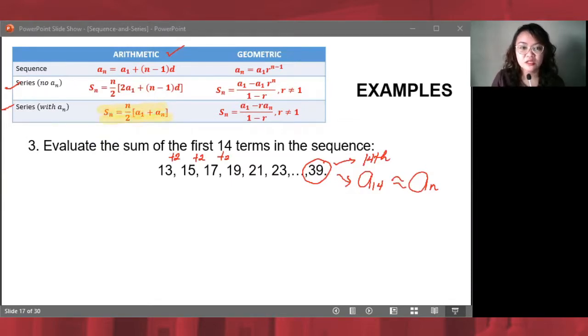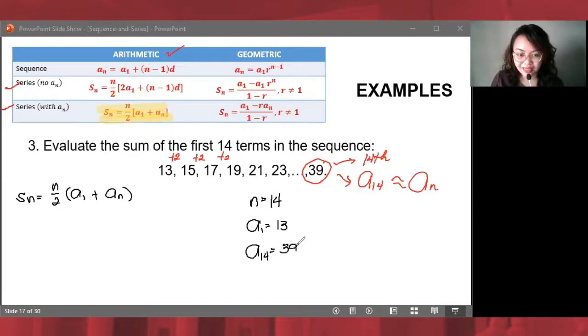Let's solve this example using that formula. We have Sₙ = n/2 × (a₁ + aₙ). Let's identify the given values. We are looking for the 14th term, so n is 14. a₁ is the first term, which is 13. aₙ, or in this case a₁₄, is 39.